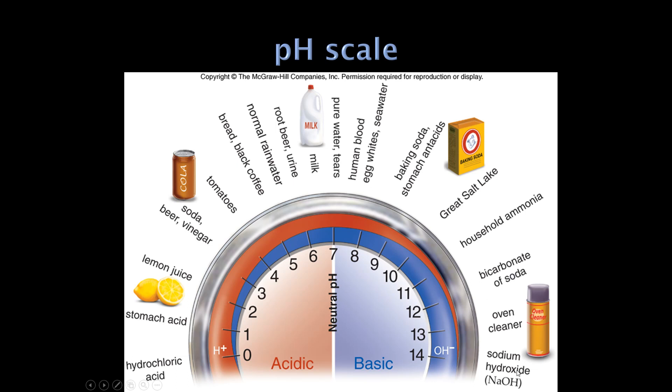Oven cleaner and sodium hydroxide have a pH right around 14. Sodium hydroxide is also known as lye, caustic, caustic lye, caustic soda. It has multiple names depending on who's manufacturing it. But sodium hydroxide is a very strong base.